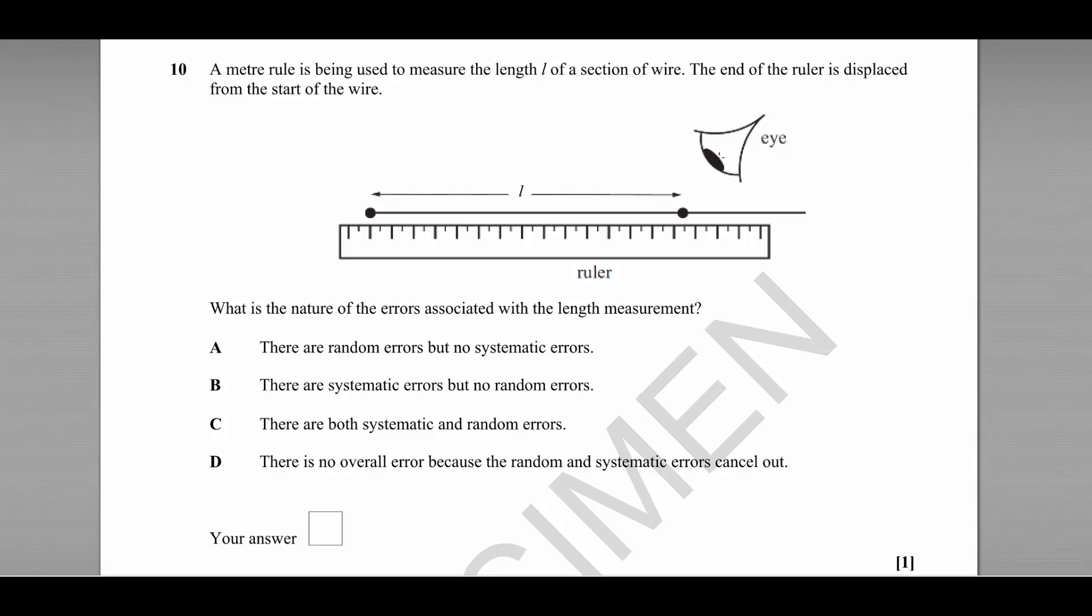We can also see here that the eye is not looking straight at the measurement, it is looking at an angle. So the eye would see the measurement as being here, when actually if the eye was held above, the measurement would be here.